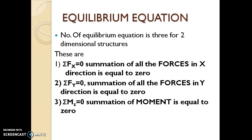We will discuss what are equilibrium equations. For static equilibrium, we need three equations for two-dimensional structures — these are called equilibrium equations. These are: summation Fx = 0 (summation of all forces in x-direction equals zero), summation Fy = 0 (summation of all forces in y-direction equals zero), and summation Mz = 0 (summation of moments equals zero).